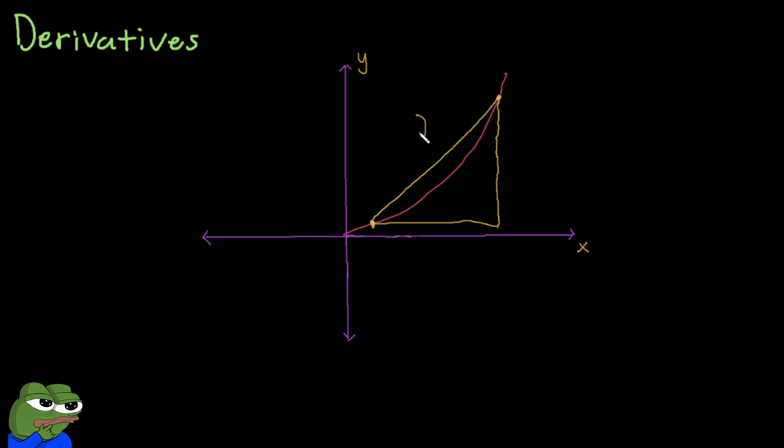So this line here is our slope. It's our average rate of change from this point to this point.